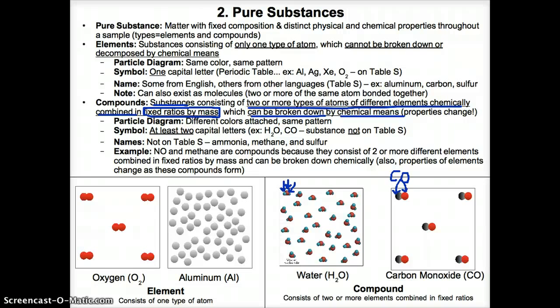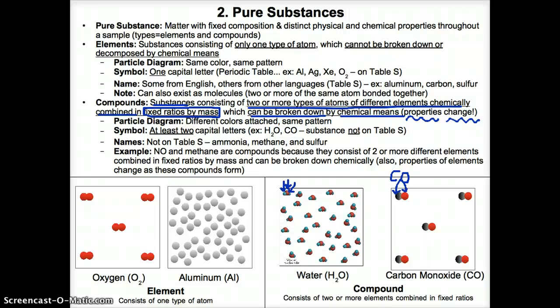One more thing about compounds is that the properties of the elements that made them up will always change. That's because when compounds combine chemically, it's a chemical change. And based on what we learned earlier, when a chemical change occurs, the composition changes, so therefore the physical and chemical properties must change as well. Since compounds consist of elements chemically combining, the properties of the elements change since they're technically undergoing a chemical change.